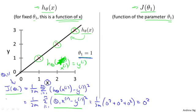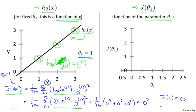We now know that J(1) is equal to 0. Let's plot that. On the right, I'm going to plot my cost function J. Because the cost function is a function of theta_1, the horizontal axis is now labeled theta_1. So I plot J(1) = 0 as a point on that graph.